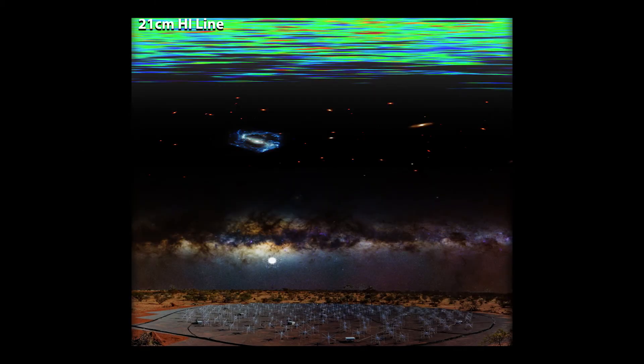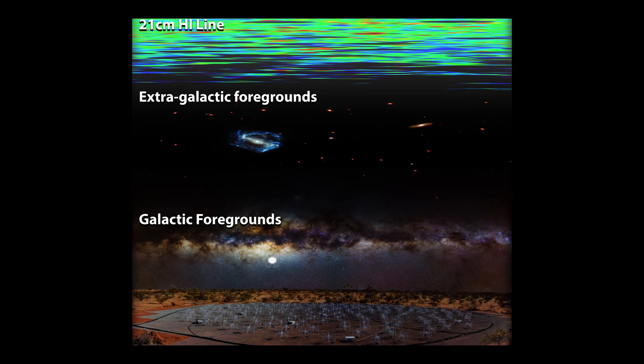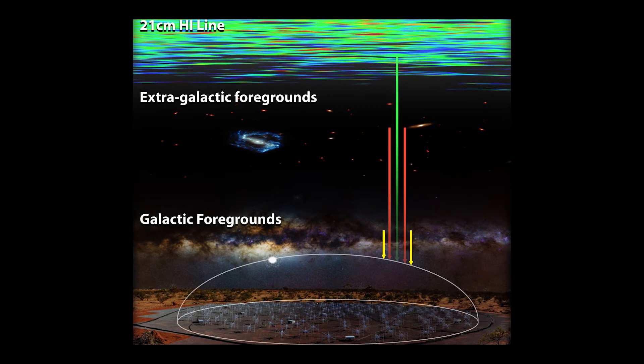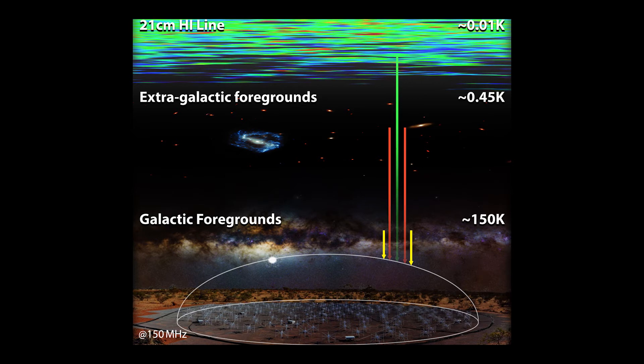However, measuring the 21cm line is not trivial, as it's swamped by extragalactic and galactic foregrounds before receiving it with a radio telescope system. It is hard to disentangle these foregrounds, as they are around 3 to 5 orders of magnitude higher than the signal we desire.